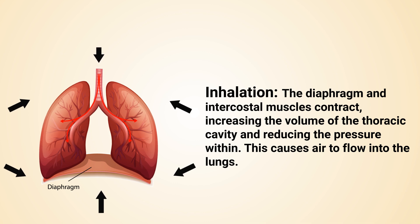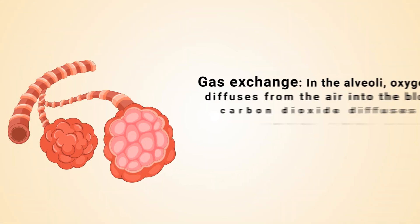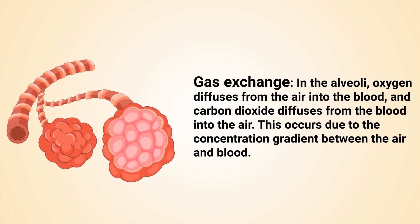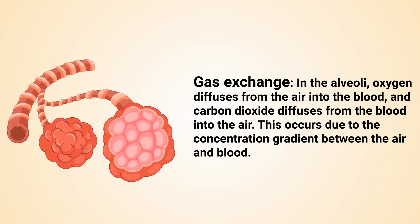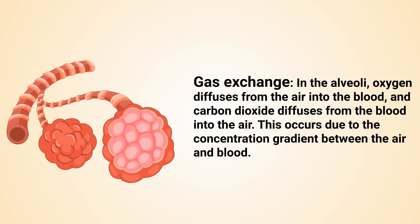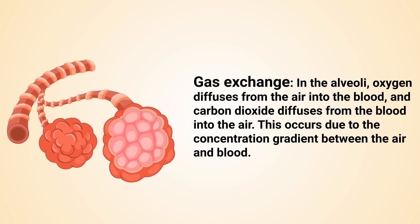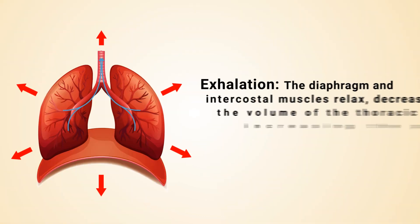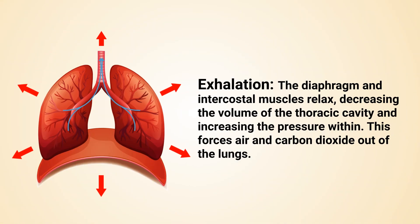This causes air to flow into the lungs. Gas exchange in the alveoli: oxygen diffuses from the air into the blood, and carbon dioxide diffuses from the blood into the air. This occurs due to the concentration gradient between the air and the blood. During exhalation, the diaphragm and intercostal muscles relax, decreasing the volume of the thoracic cavity.